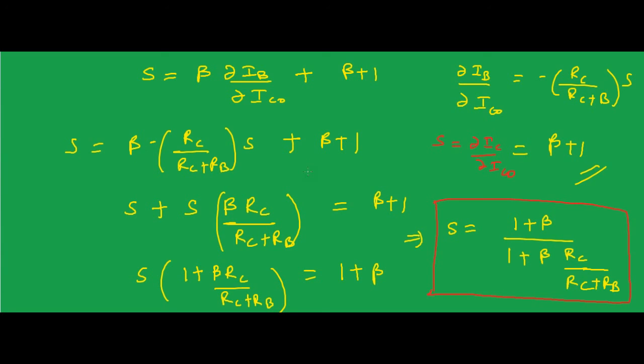In the coming videos, we will see what is the stability factor of fixed bias with resistance in the emitter, and then the voltage divider bias — we will calculate the stability factor for that circuit as well. Thanks for watching. Please subscribe to our channel. Thank you.